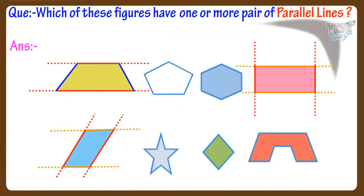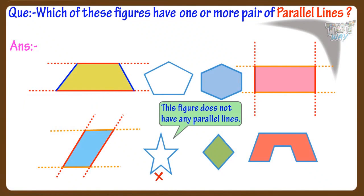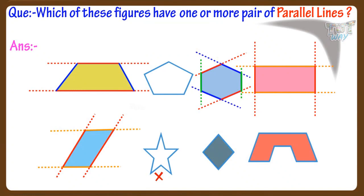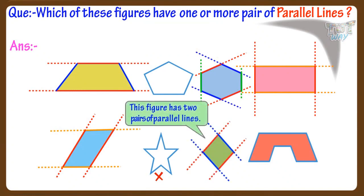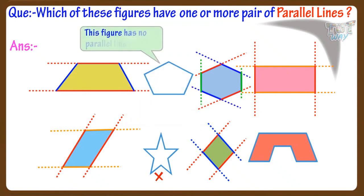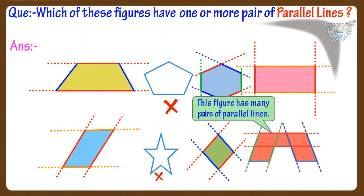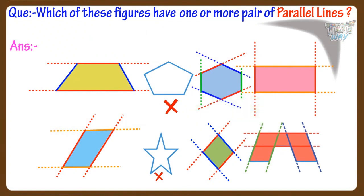This figure does not have any parallel lines. This figure has many pairs of parallel lines. This figure has two pairs of parallel lines. This figure does not have any parallel lines. This figure has many pairs of parallel lines. So we have marked all the shapes that have one or more pairs of parallel lines.